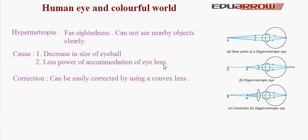Correction of hypermetropia: hypermetropia can be easily corrected by using a convex lens. The convex lens converges the light rays, which are further converged by the eye lens — which is also a convex lens — onto the retina, so that a clear image is formed and objects can be seen clearly.